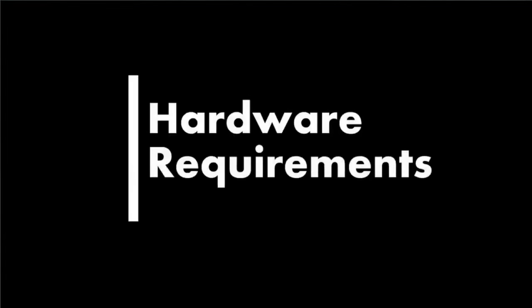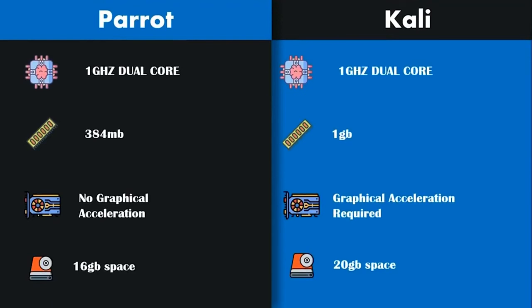The first criteria of differences we are going to discuss is hardware requirements. As you can see on this slide, I have put down the system requirements of Parrot OS on the left-hand side and Kali Linux on the right-hand side. Parrot OS and Kali Linux both need a 1 GHz dual-core CPU. When it comes to RAM, Parrot OS needs much lesser RAM — Parrot needs 384 MB for its minimal running time, while Kali Linux needs 1 GB of RAM. In terms of GPU, Parrot OS doesn't need a graphics card, while Kali Linux running the GNOME desktop will certainly need one. Parrot OS needs 16 GB of free hard disk space for its full installation, and Kali Linux needs 20 GB.